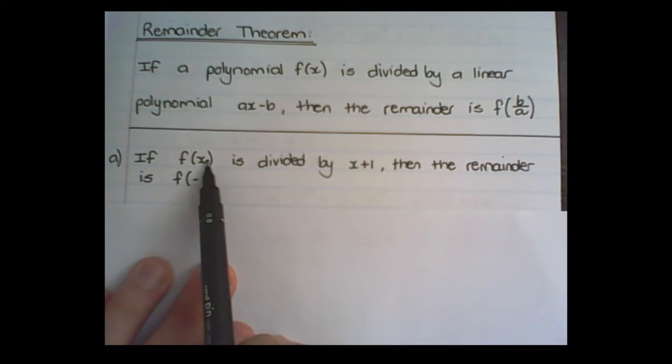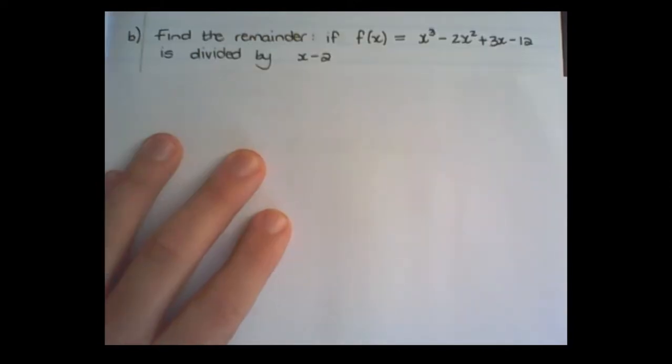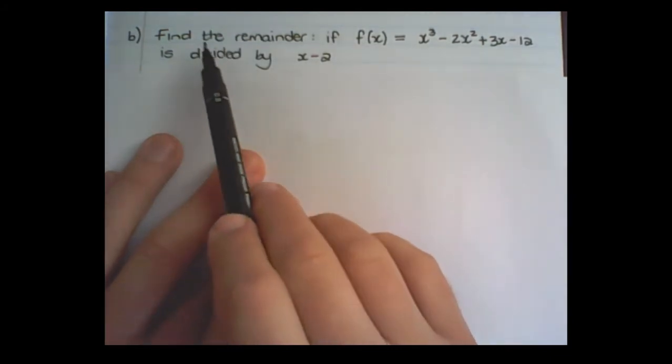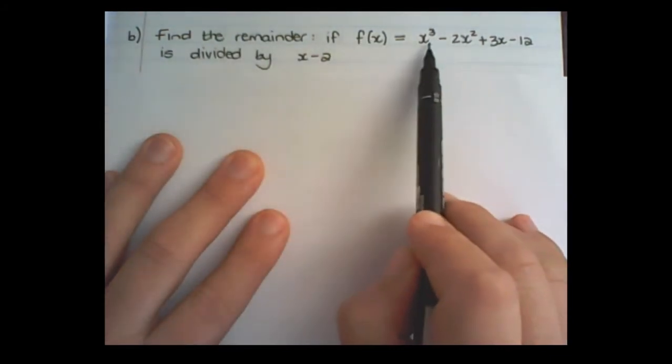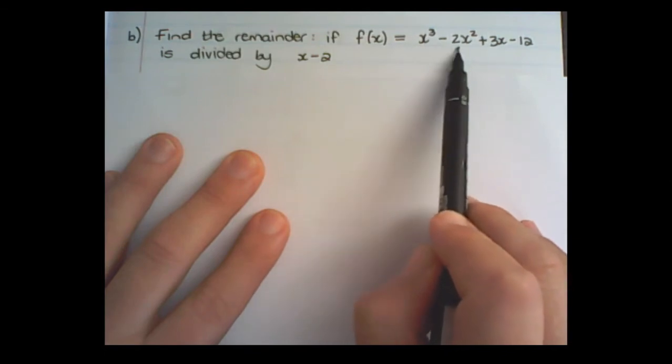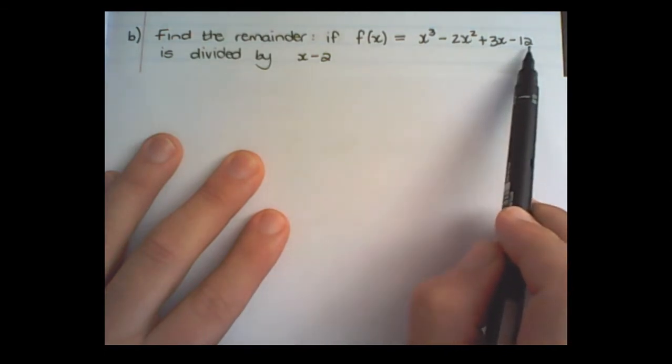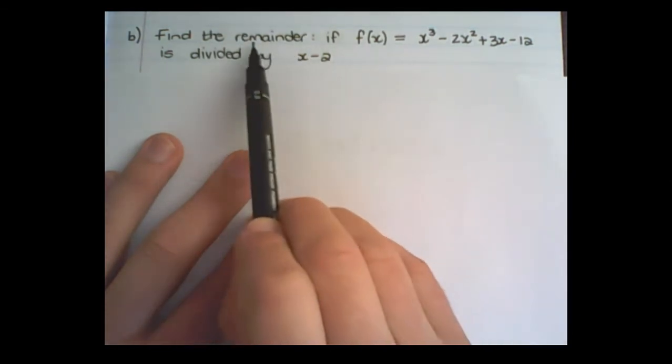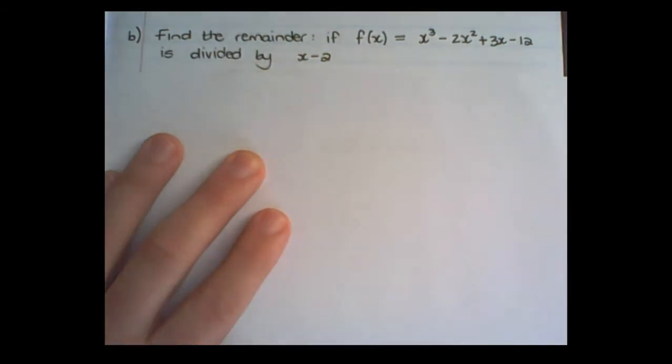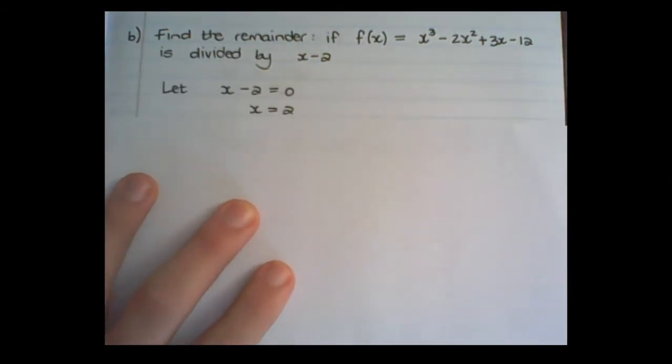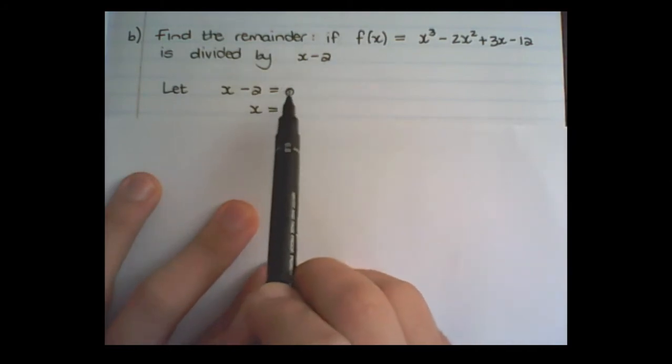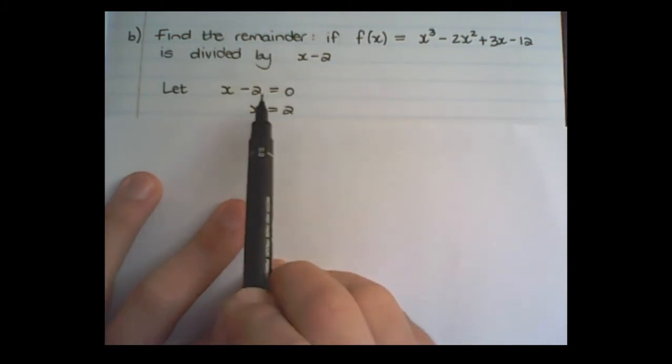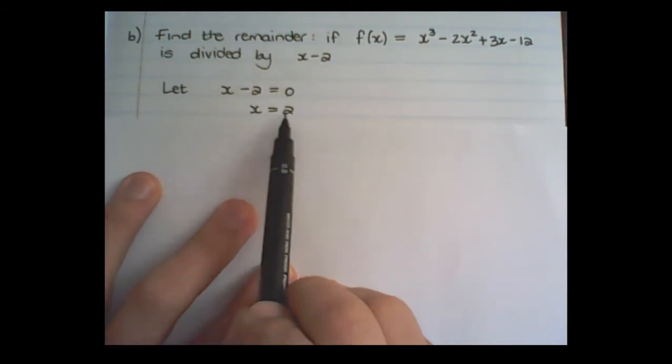Find the remainder if f(x) = x³ - 2x² + 3x - 12 is divided by x - 2. We are not going to divide this; we are simply going to look for the remainder. I take x - 2 and set it equal to 0, then solve for x, so x = 2.